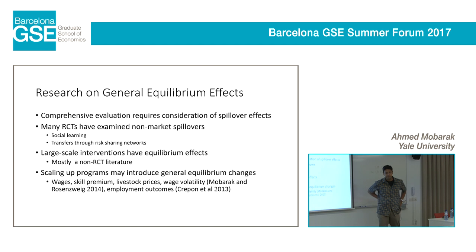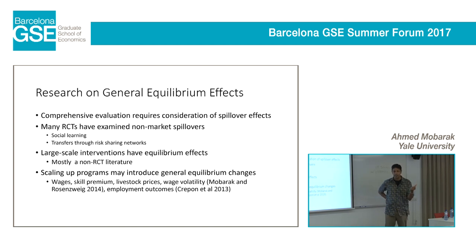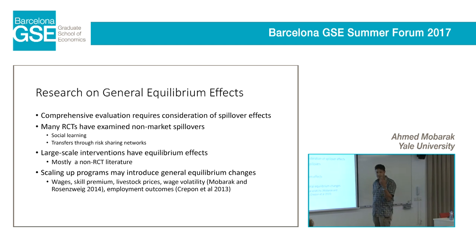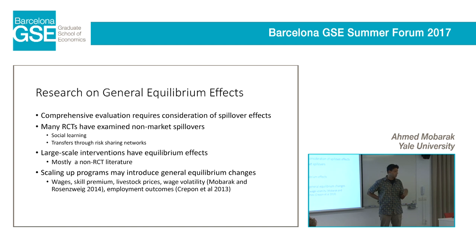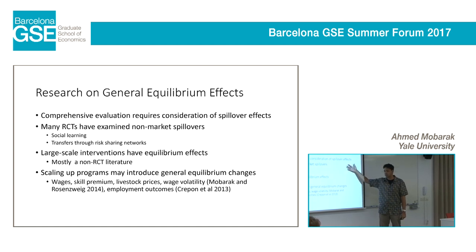A broader connection to the literature: in development we have lots of randomized control trials evaluating very specific programs. Now if you scale these things up, there might be market-level effects. If you train a few people, maybe they'd do better. But if you train everybody in the same skill, they might compete with each other in the labor market. If you give some people goats and some training, they do a lot better, but if you give everybody goats, maybe the price of goat milk falls. So in this paper we'll be thinking about those types of general equilibrium effects.